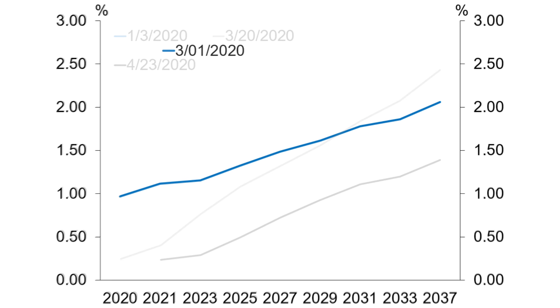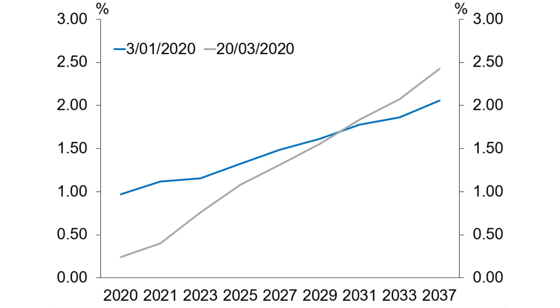This is what the yield curve looked like back in January. You can see that at the very short-term, interest rates were close to 1%, which is where the official cash rate was at that time. Here is the same yield curve in late March. This was after the Reserve Bank had lowered the official cash rate to 0.25%, but before we had started our QE program. While interest rates had fallen at the short-term, longer-term interest rates had actually increased, reflecting uncertainty about the economic outlook and nervousness in financial markets.